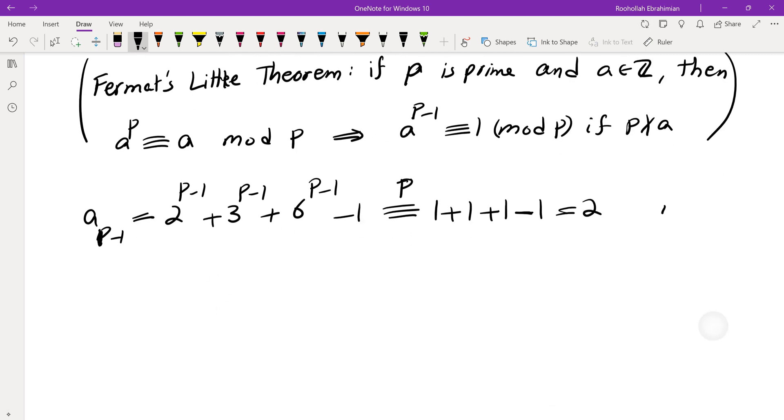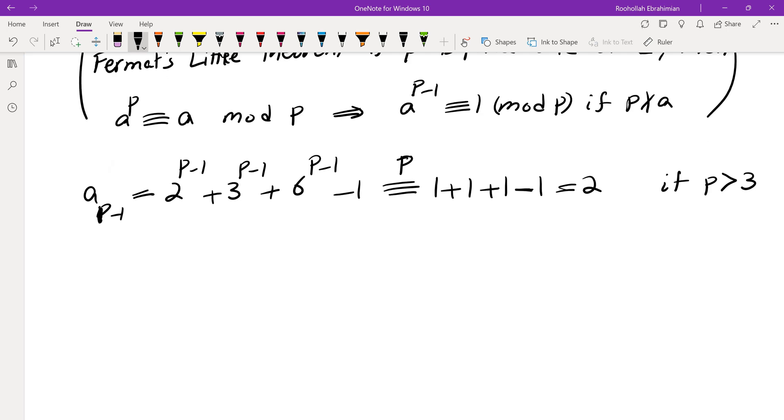And this is assuming that p is relatively prime to 2, 3, and 6, which means it's more than 3. So one other thing that I can evaluate is a_(p-2). Because if I look at this one, this is 2^(p-2) plus 3^(p-2) plus 6^(p-2). Now what are these numbers mod p? So 2^(p-1) minus 1 is just 1. So this is in fact inverse of 2. In other words, this is basically 1 half.